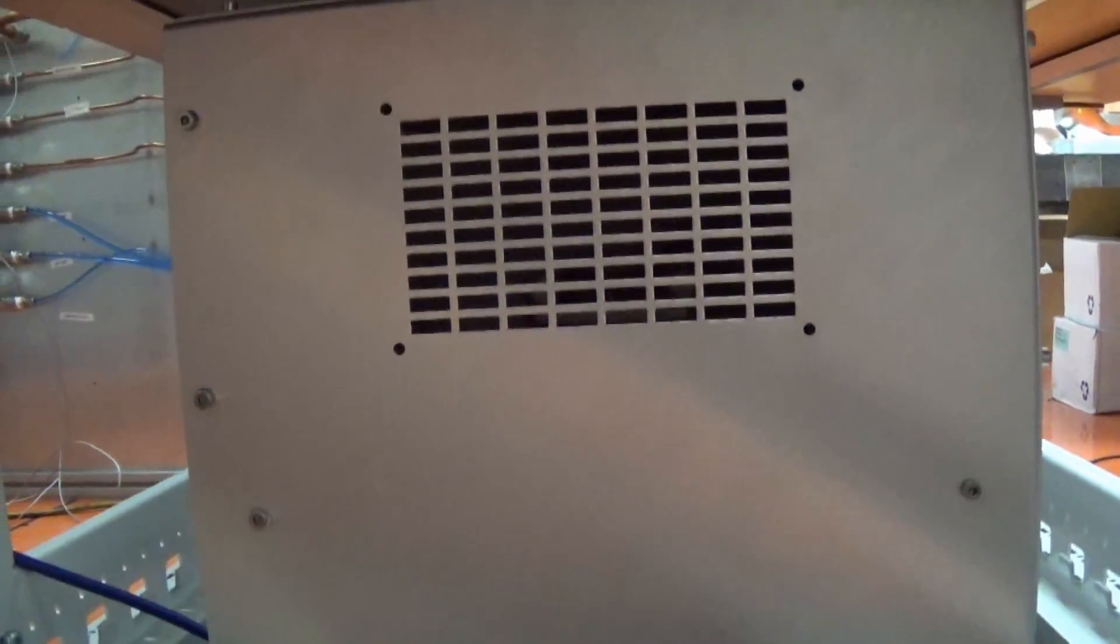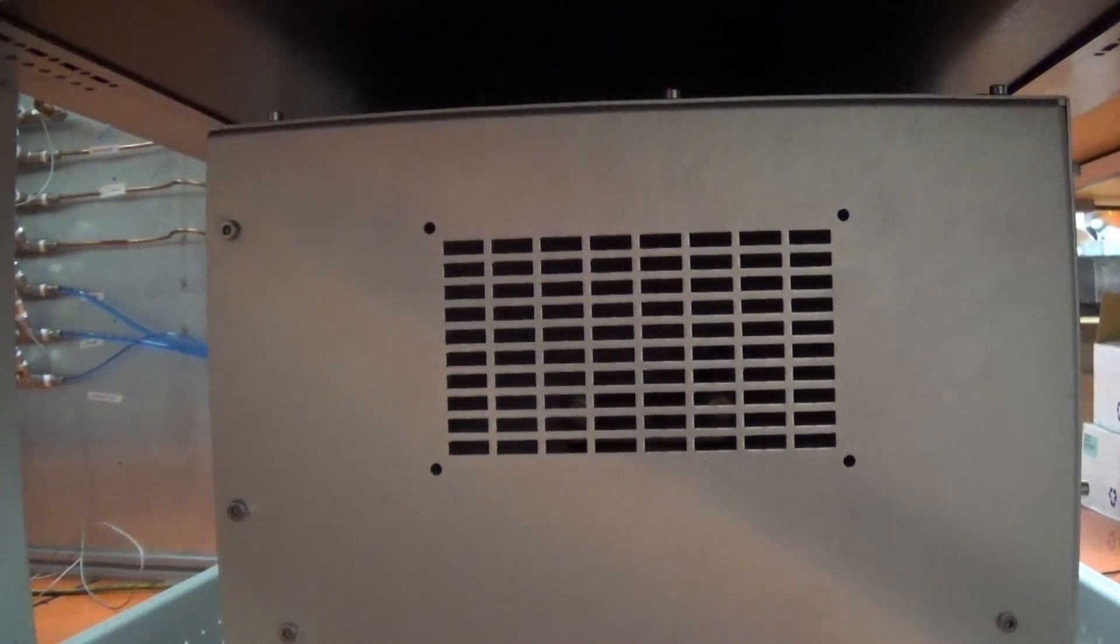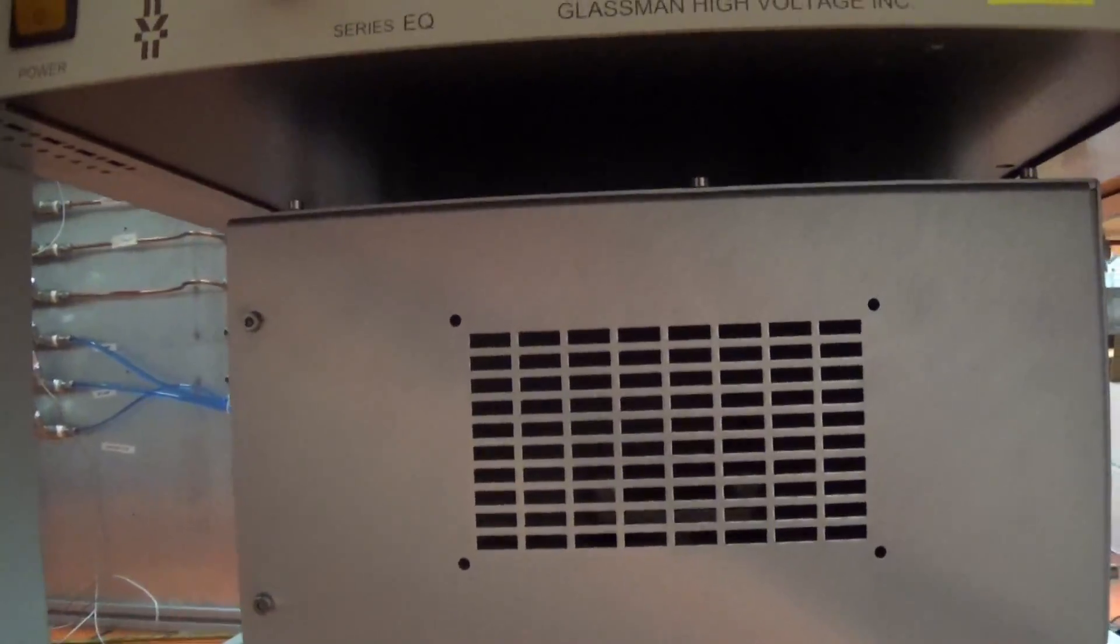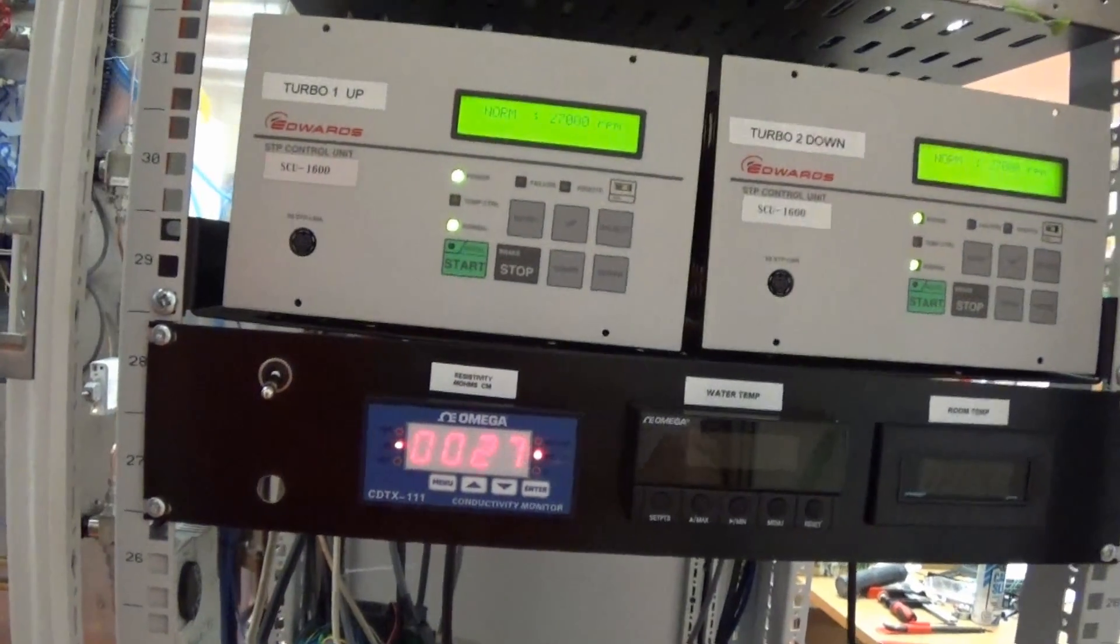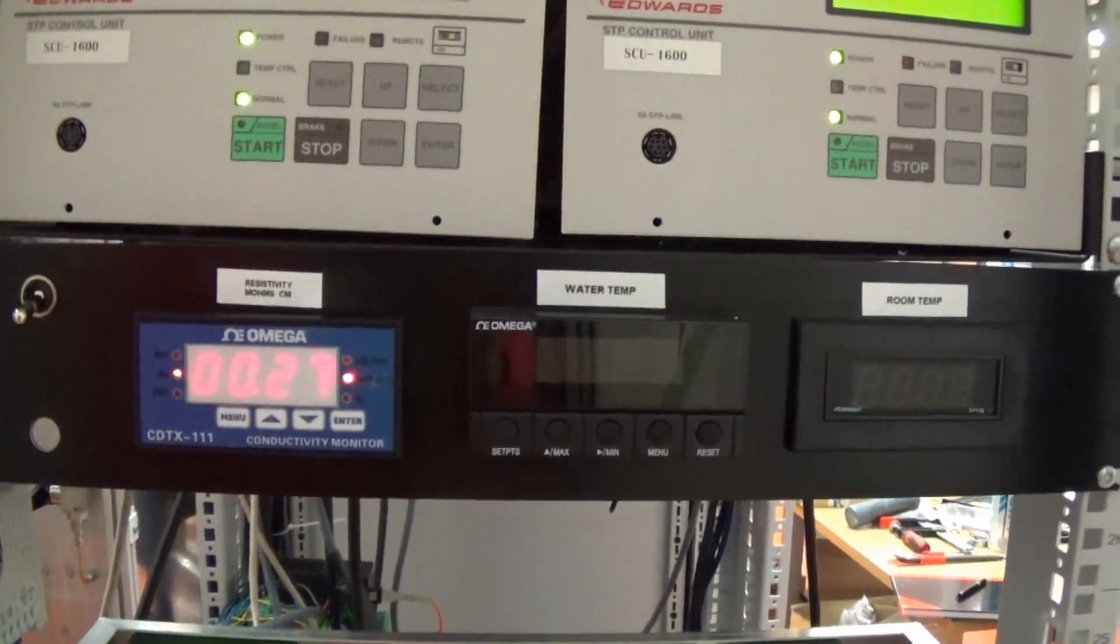And down in here is a box. Inside is a big relay that shorts out the 30,000 volts whenever you open one of these doors. This is protecting the operators going inside so they won't get shocked by the high voltage. These gauges here just monitor the temperature and the conductivity of the water.